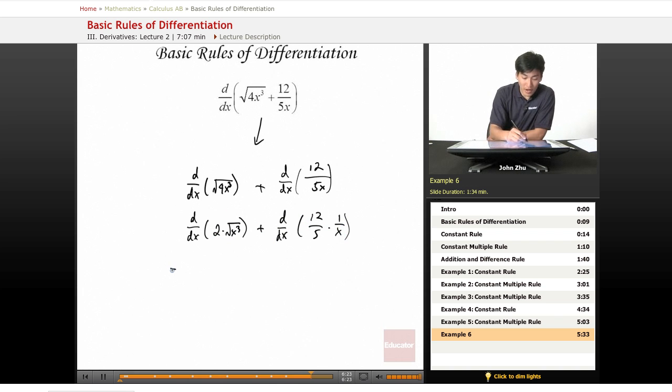Rewriting all this with the constant multiple rule: 2 times d/dx of square root of x cubed, which just means x to the 3 halves, plus 12 over 5 times d/dx of x to the negative 1. And there's our expression for the derivative of this function.